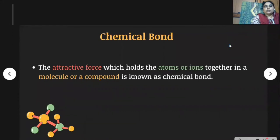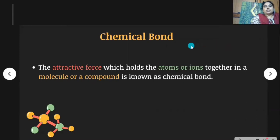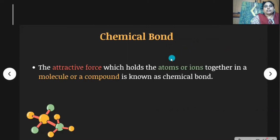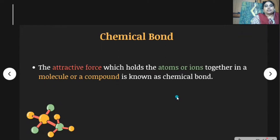Students, you already know about the periodic table. In the periodic table, a total of 118 elements are present. Out of 118 elements, most of the elements occur in nature in the form of compounds — they do not exist in their free state. For example, in water, hydrogen combines with oxygen. Some attractive force must be present between these two atoms. The attractive force which holds the atoms or ions together in a molecule or compound is known as a chemical bond.